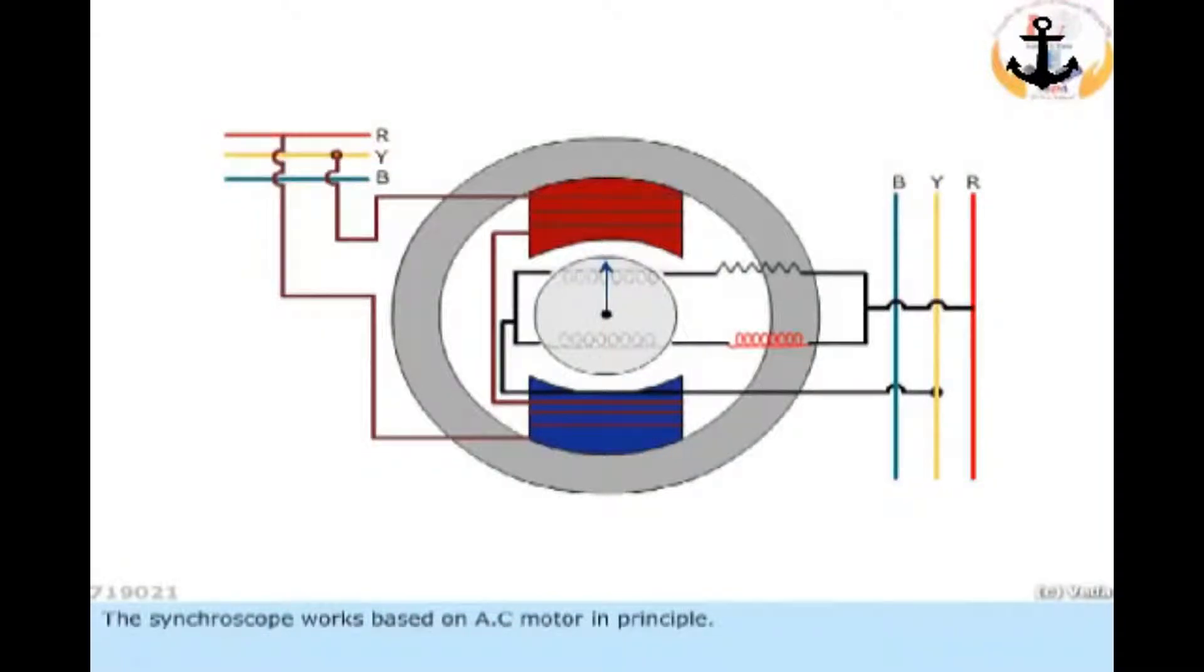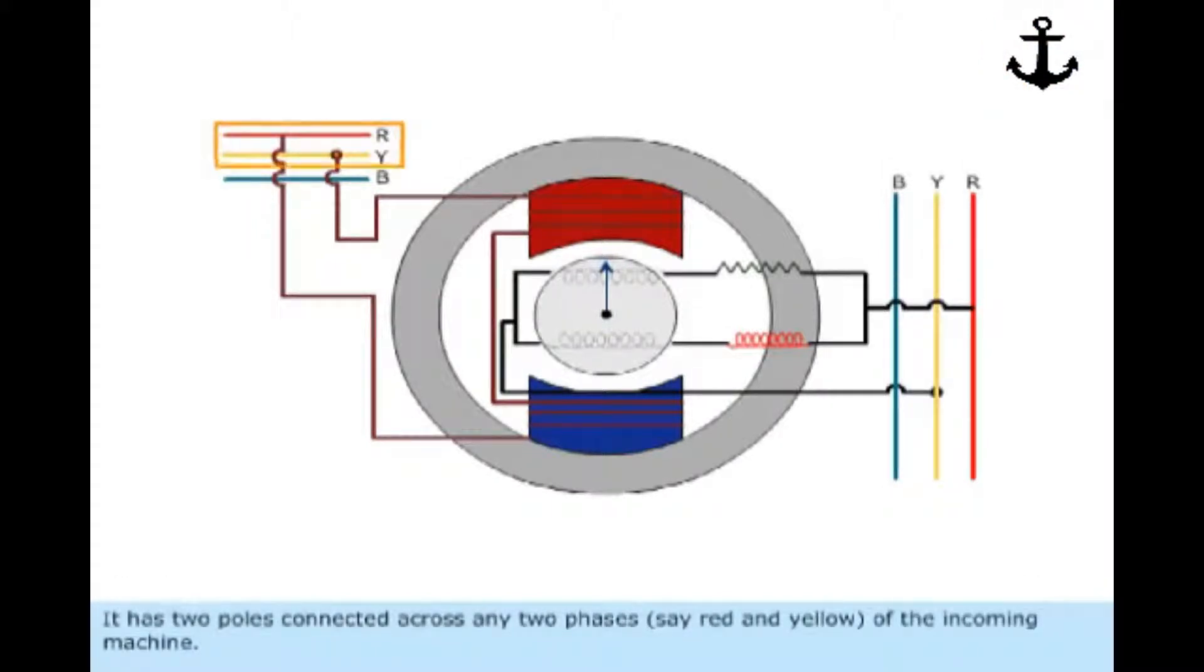The synchroscope works based on AC motor in principle. It has two poles connected across any two phases, say red and yellow, of the incoming machine.